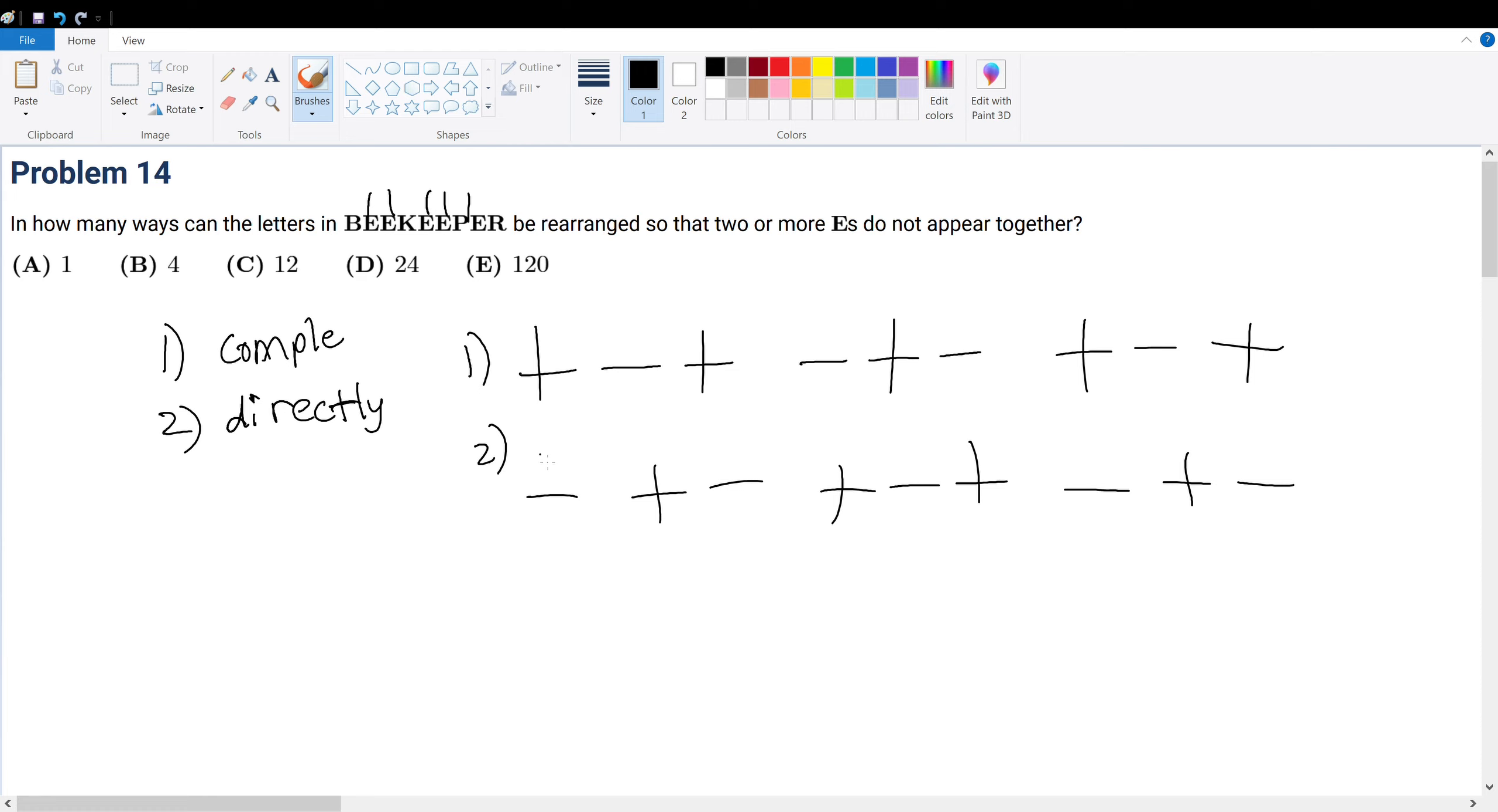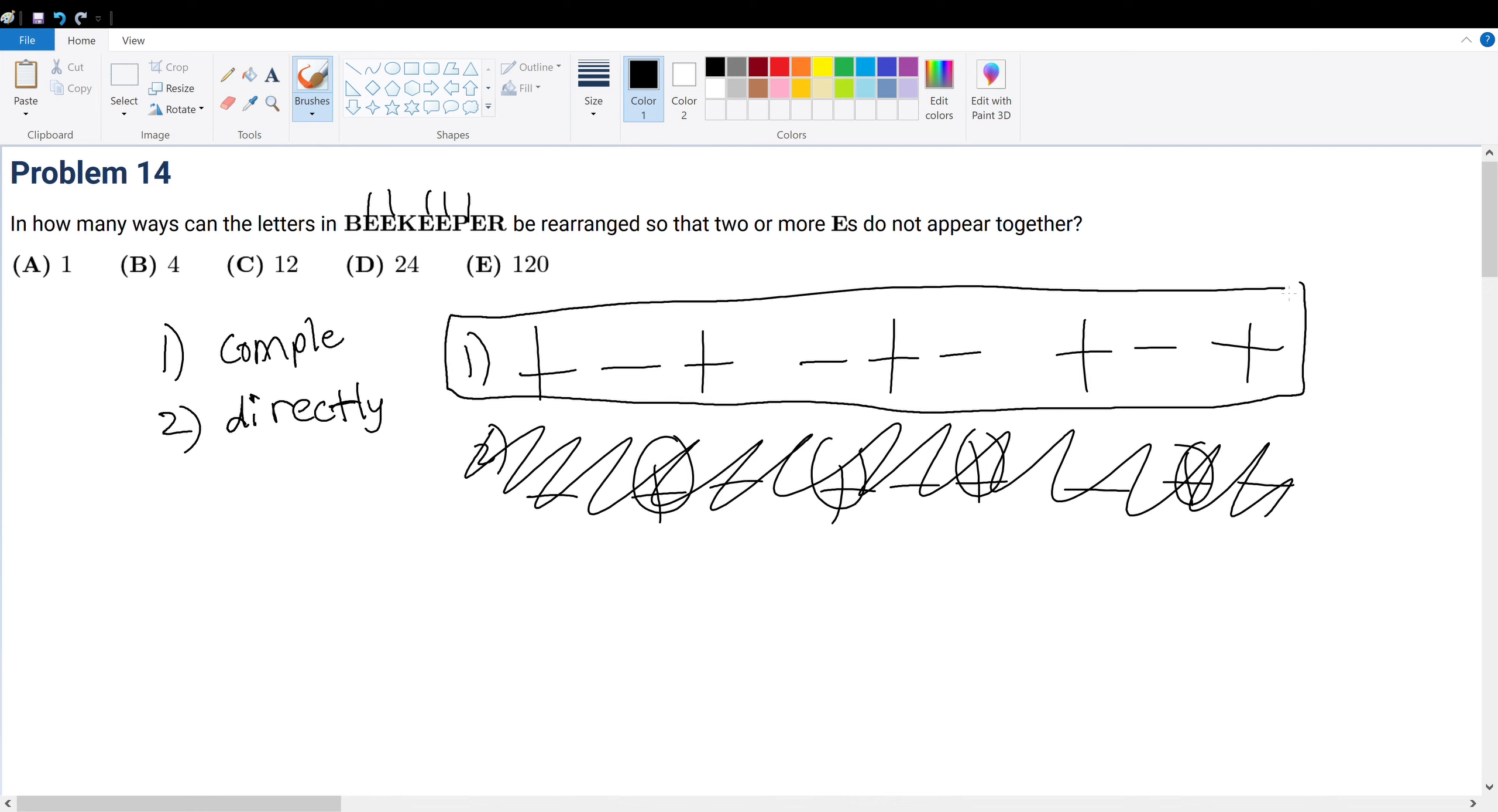Now, can the second case exist? The second case cannot exist because we have four E's, but we have five total E's. So in other words, we just need to do direct counting because direct counting shows us that we only have one correct arrangement. That's the only arrangement possible.